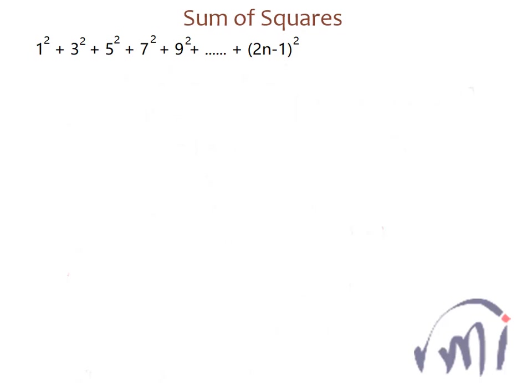In this video we have to find the sum of the squares of odd numbers — n odd numbers. The first odd number is 1 and the nth odd number will be 2n minus 1. So we have to find the sum of the squares of all these odd numbers.